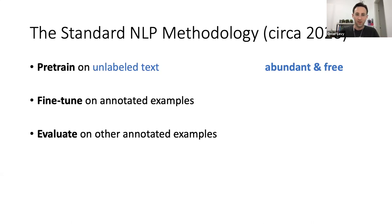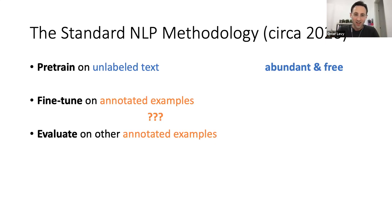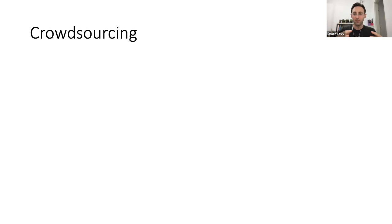Pre-training is great because we basically have as many examples as we like — unlimited raw text. But unfortunately, that's not quite true for annotated examples. Crowdsourcing is probably the most common way to collect annotated examples. We can design the task, upload it to a platform like Amazon's Mechanical Turk, and then pay laypeople — basically anyone who's literate — to annotate our data.